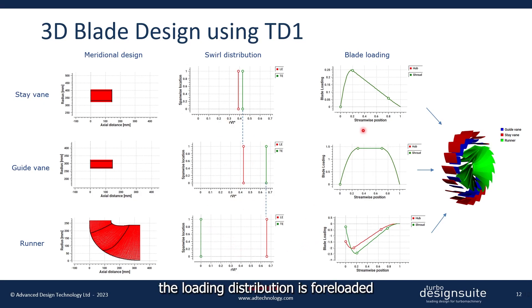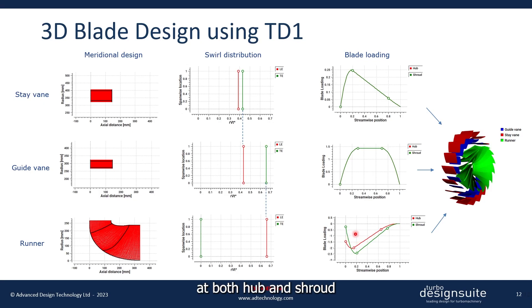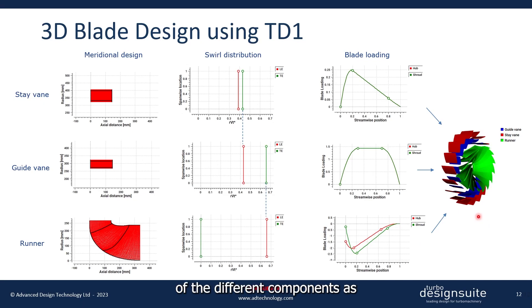The loading distribution is front-loaded for the stay vane, mid-loaded for the guide vane, and for the mixed-flow runner it's front-loaded at both hub and shroud. These inputs result in 3D geometries of the different components, as shown here.